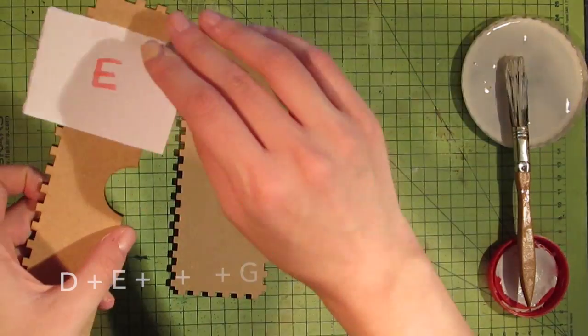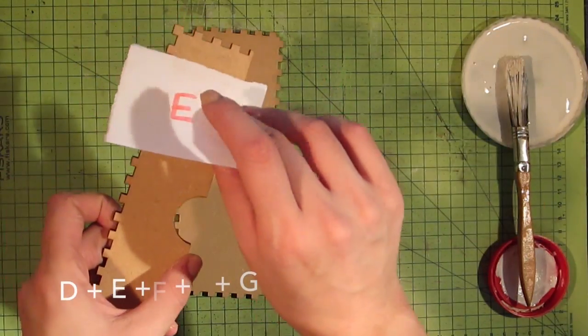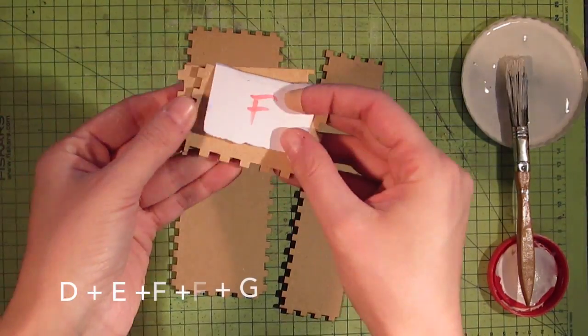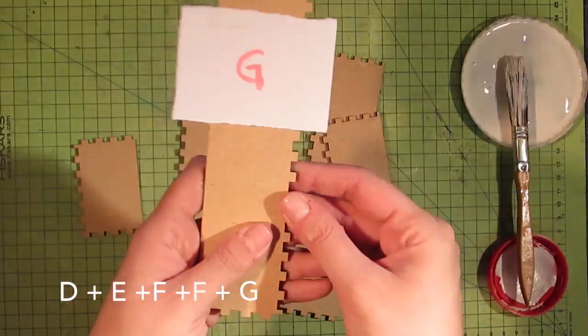Now let's build the drawers. Take a panel D, a panel E, two panels F and a panel G.